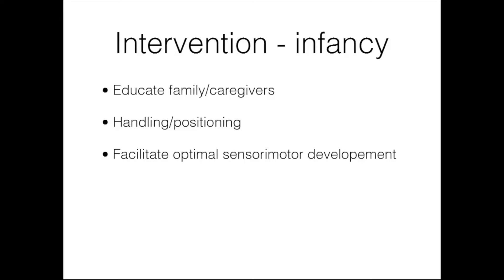At this age, we also want to facilitate optimal sensory motor development. We need to focus on well-aligned postural stability and smooth mobility to allow for attainment of motor skills and milestones. The normal motor developmental sequence is optimal and may guide interventions, but physical therapists should understand that children with cerebral palsy don't necessarily always follow a normal sequence. Although it's important to go through normal developmental milestones, therapy may need to be more functionally oriented at times.